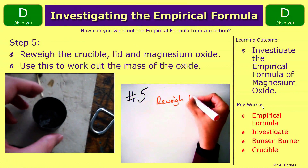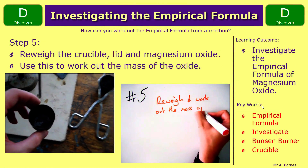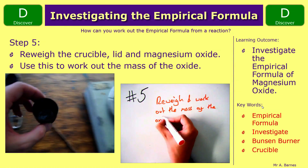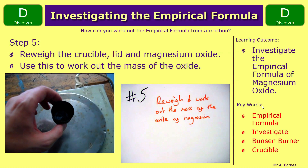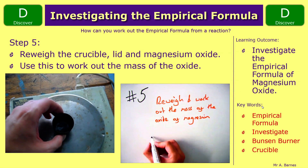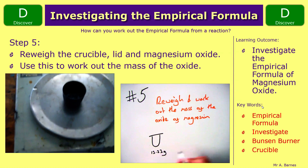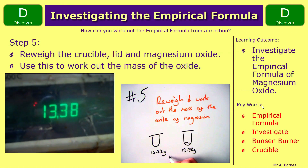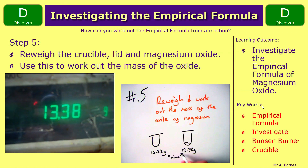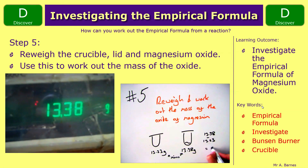Step five is to re-weigh your crucible with your magnesium oxide in. It came out to 13.38 grams. You can then take that away from your original mass of 13.23, which shows you've got 0.15 grams of magnesium oxide.